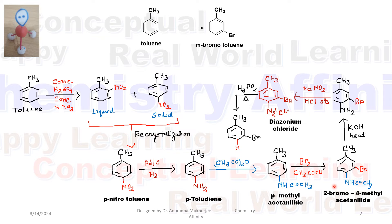The next step is bromination. Both the methyl group and the NHCOCH₃ group are ortho/para directors, as both are electron donating groups. However, the para position is blocked in both cases. Bromine can come either ortho with respect to methyl, or ortho with respect to NHCOCH₃. Since NHCOCH₃ dominates over methyl, bromine will come ortho with respect to NHCOCH₃.